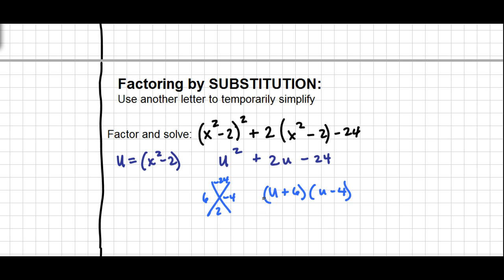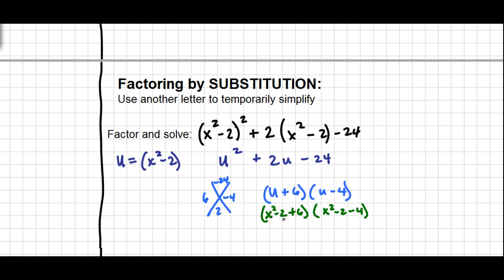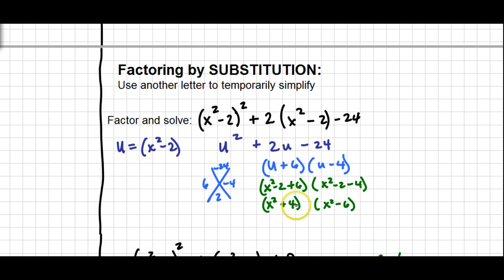I can't factor any further, so now I plug the u back in — the u gets re-replaced with what it originally was. So I get (x²−2+6) for the first chunk and (x²−2−4) for the second. These can be simplified: the first becomes x²+4, and the second becomes x²−6. Keep in mind we can factor those further.